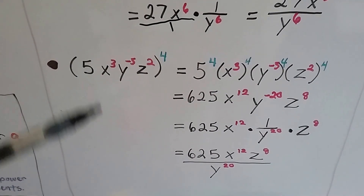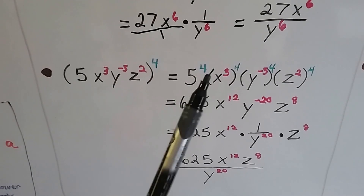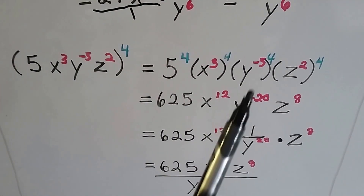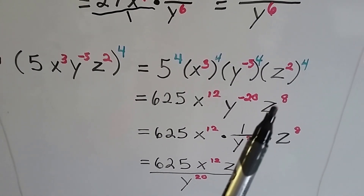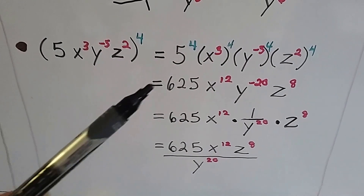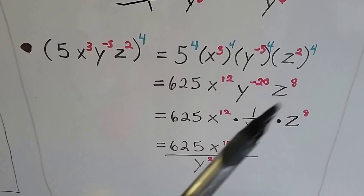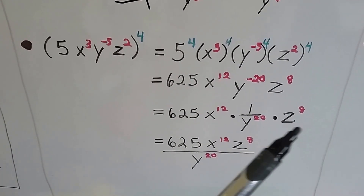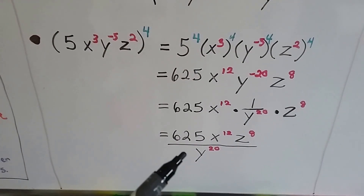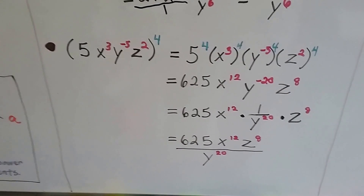Each one of these is going to be raised to the fourth power, so we multiply each one. We get 5 to the fourth, x to the 3 times 4 which makes x to the twelfth. Here we have a negative 5, so that's going to make a negative 20. And then we've got 2 and 4, that's going to make a positive 8. So we know this is going to make a fraction because it's a negative. 5 to the fourth power is 625. We do our x to the twelfth, our y to the negative 20th, our z to the 8th. It could be rewritten as they're multiplied together. And this is a fraction, 1 divided by y to the 20th power.